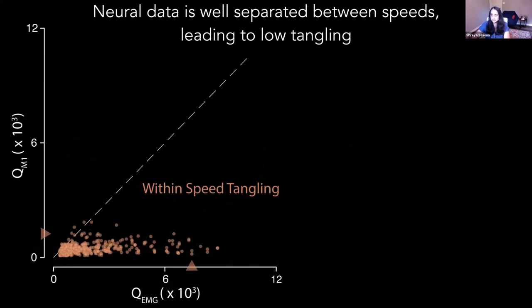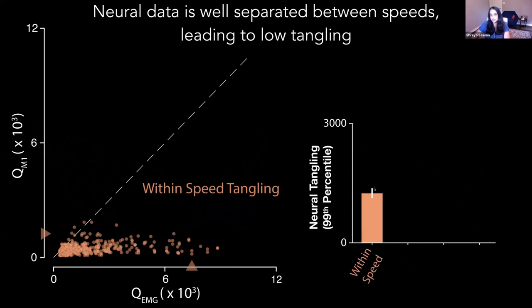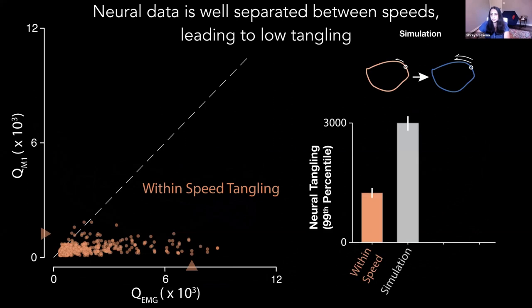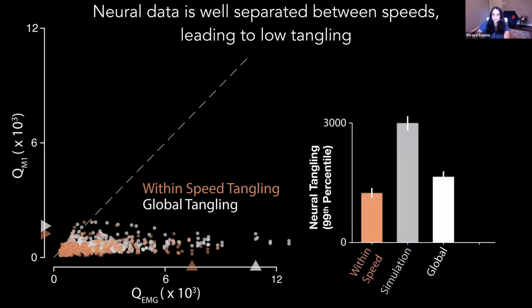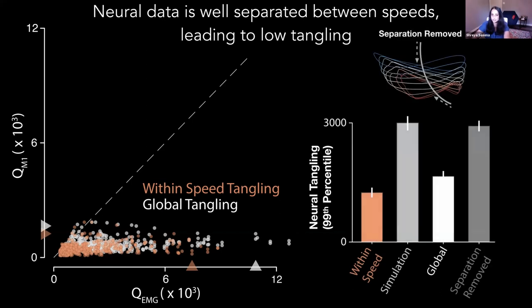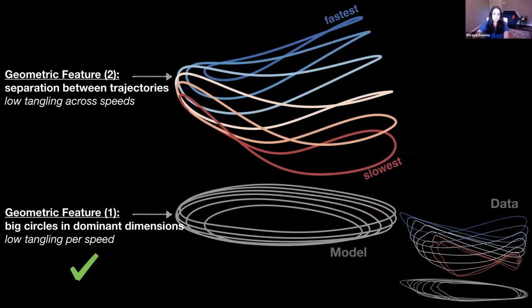And how do we know that it's the separation that is leading to low tangling? We can actually test that out directly. So here within, here's the within speed tangling for both muscle and neural data. And here's the 99th percentile of just the neural tangling values. And I'll first just show you how bad the tangling could have been if the trajectories were just overlaid on top of each other. Here we just speed up and slow down the reference trajectory and add biophysical noise. And they are basically directly on top of each other. And we see that the tangling in these simulated trajectories shoots up more than 2x. And in fact, the global, actual global tangling is nowhere near this level. And in fact, it is exactly this separation that is leading to the low trajectory tangling, which we can directly test by artificially removing this separation, in which case the tangling shoots up again.